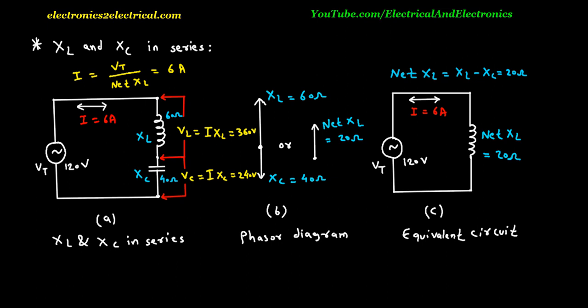The voltage drop across XL in figure A is VL, equal to current I multiplied by XL: 6 amperes times 60 ohms equals 360 volts. The voltage drop across XC is VC, equal to current I multiplied by XC: 6 amperes times 40 ohms equals 240 volts.